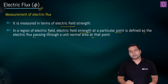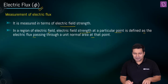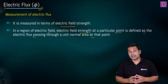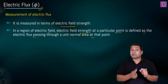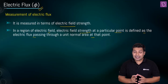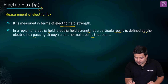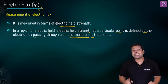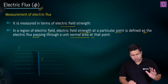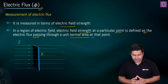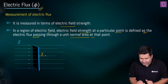If you want to define the value of electric field intensity at any point, it can be defined in terms of electric flux — specifically, as the amount of electric flux passing through a unit normal area at that particular point. Now imagine there is some uniform electric field and you have an area placed normally, with the area vector pointing in the corresponding direction.